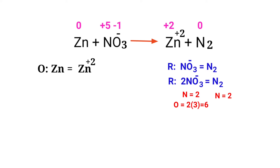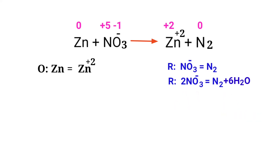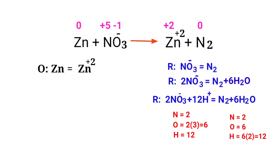The nitrogen atoms are now balanced. Next, we need to balance the oxygen atoms. To do this, you produce water molecules and add H+ ions to the appropriate side. Now the number of atoms are balanced in the reduction half reaction.